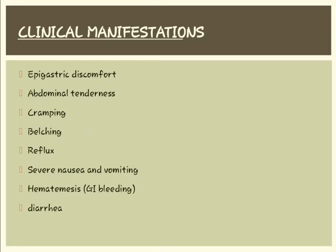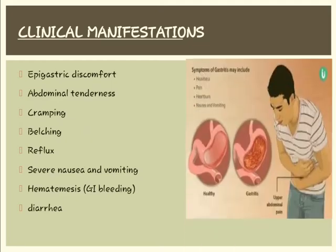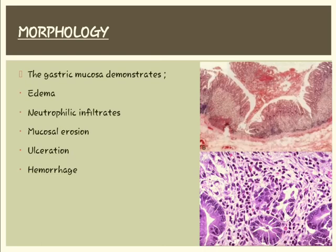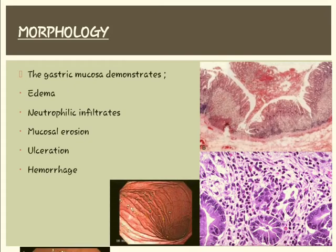The clinical manifestations of acute gastritis are epigastric discomfort, abdominal tenderness, cramping, belching, reflux, severe nausea and vomiting, hematemesis, and diarrhea. The morphology of gastric mucosa in acute gastritis includes edema, neutrophilic infiltrates, mucosal erosion, ulceration, and hemorrhage. The slide shows histological and gross appearance images of this morphology.